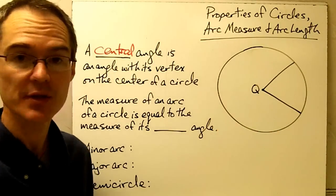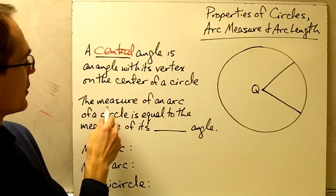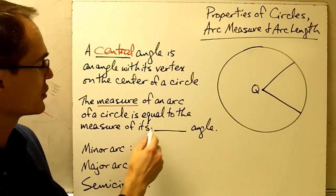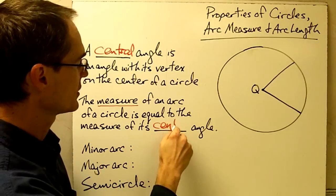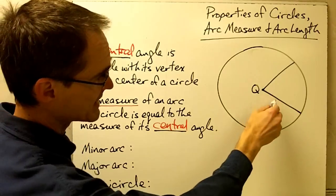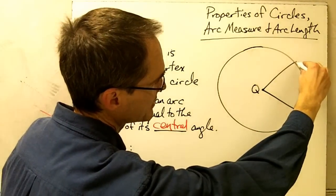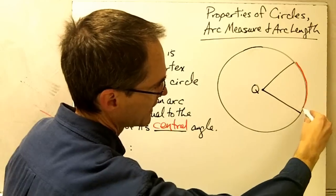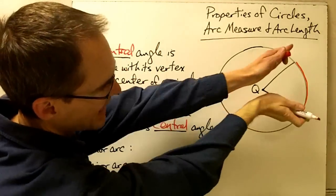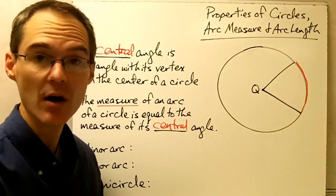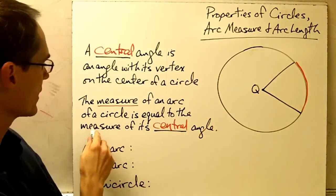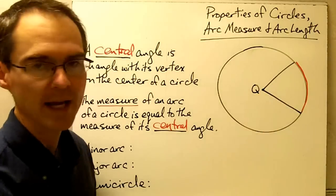This angle right here has its vertex on the center of a circle. We've also learned that the measure of an arc of a circle is equal to the measure of its central angle. So in circle Q, I have a central angle, and this piece of the circle is an arc. The sides of that angle are cutting out that arc on this circle. So the measure of this arc is the same thing as the measure of this central angle.